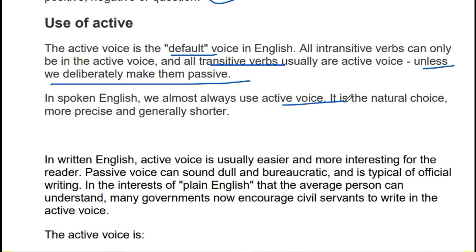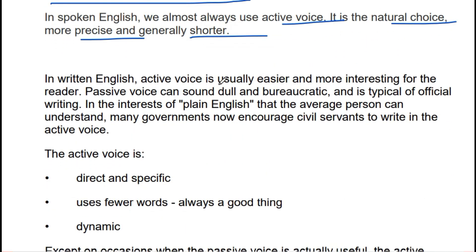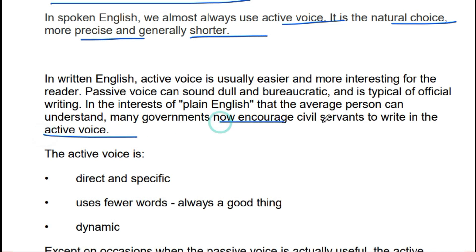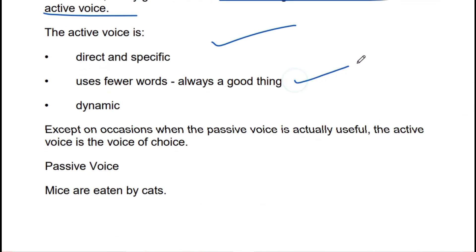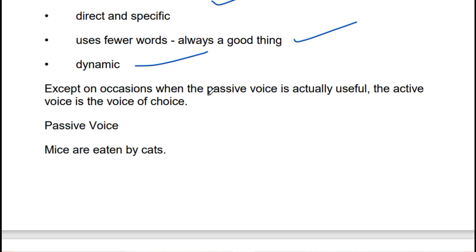In spoken English we use the active voice because it is the natural voice — it is precise and short. In written English, active voice is usually easier and more interesting for the reader. Passive voice can sound dull and bureaucratic; it is typical of official writing. Many governments now encourage civil servants to write in the active voice, as it is more fluent, direct, and dynamic. So we normally use active voice, but when grammar requires a change, we must learn the rules.